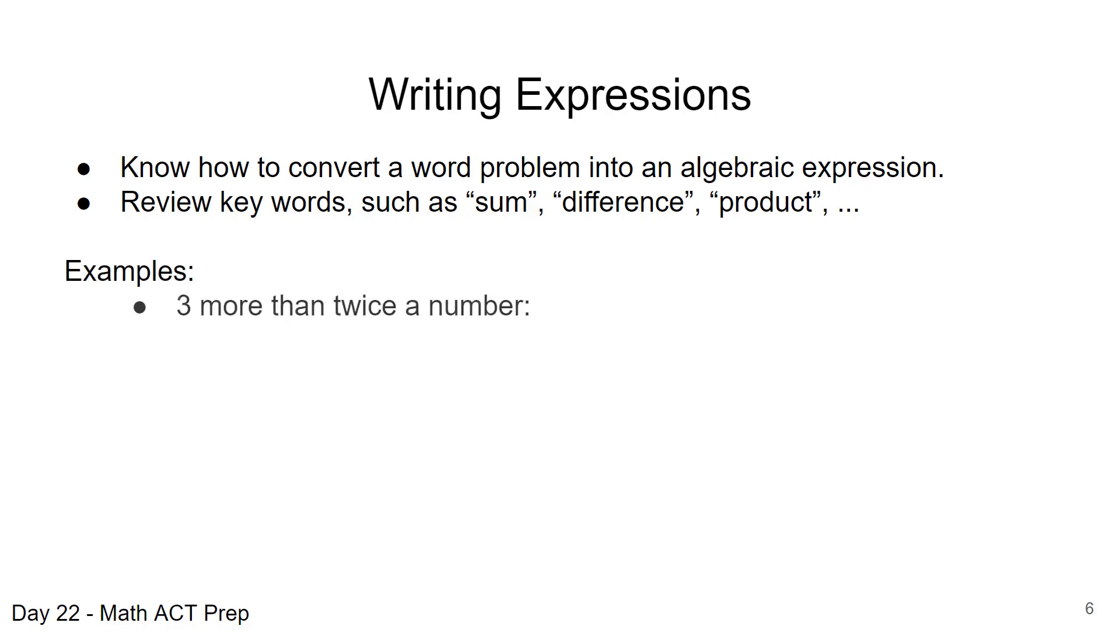So let's take a look at this example. If we were asked to take the words here, three more than twice a number, how would you write that as an algebraic expression? Three more than twice a number. We could set up three plus 2x. X is our variable. It is the number. You could have used any variable there. We just chose x. Three more than twice that. Three plus 2x.